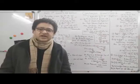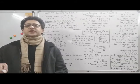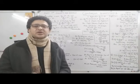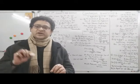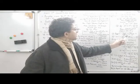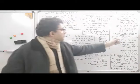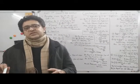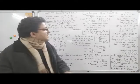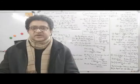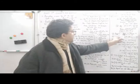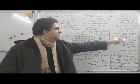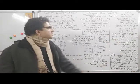Profit percent = (Profit / CP) × 100, and Loss percent = (Loss / CP) × 100. In both cases the denominator is always CP — never SP. So profit percent is profit upon CP × 100, and loss percent is loss upon CP × 100. Also note that profit and gain mean the same thing, so gain percent and profit percent are the same.